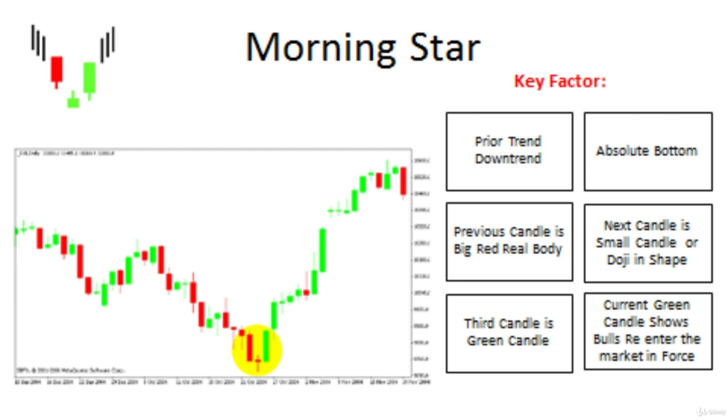As shown in the example chart on your screen, there is a prior downtrend and at the absolute bottom, a big real red candle body is formed. A small doji formation appears at the absolute bottom, and a big green candle body shows control over the bears.